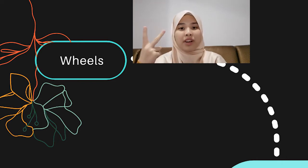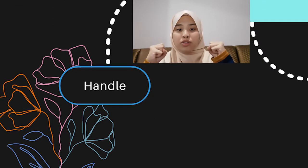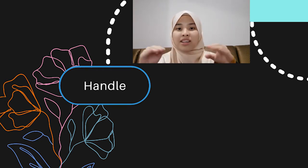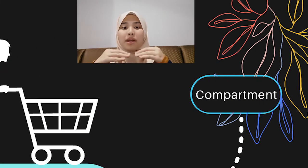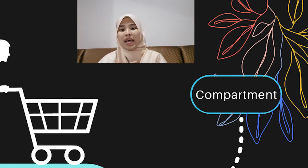As for the wheels, some shopping carts have four swivel wheels, and some have two swivel wheels in front with two fixed wheels at the back. The handle is used to push and pull the cart to move merchandise more easily. The compartment is located in front of the handle, and people may place merchandise or even babies inside depending on how they want to utilize it.